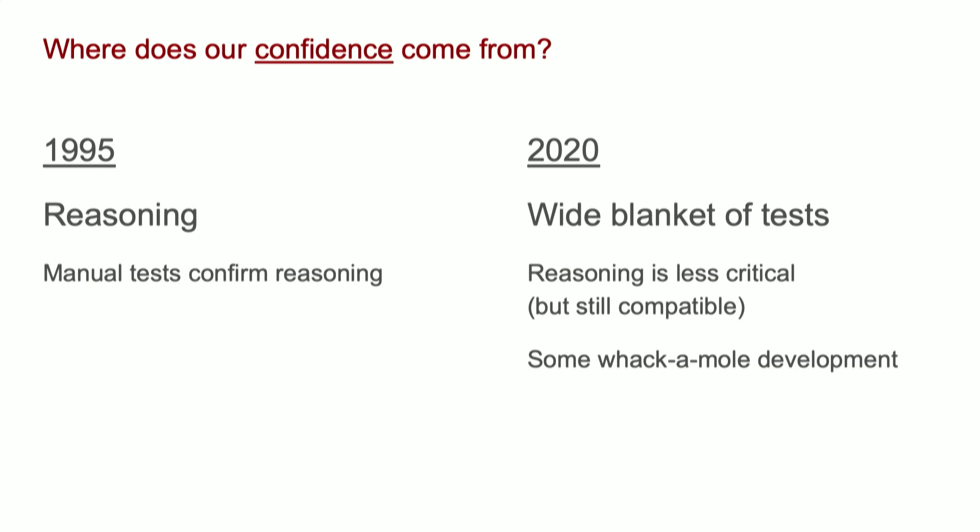I call it whack-a-mole development. It goes something like this: you write some code, but you don't really fully understand everything. You write this code and a test breaks, so you go fix that. Oh, something else broke — another test broke. Fix that. Everything's looking pretty good. Oh, the end-to-end tests are broken. You go fix that and you're off to the races.